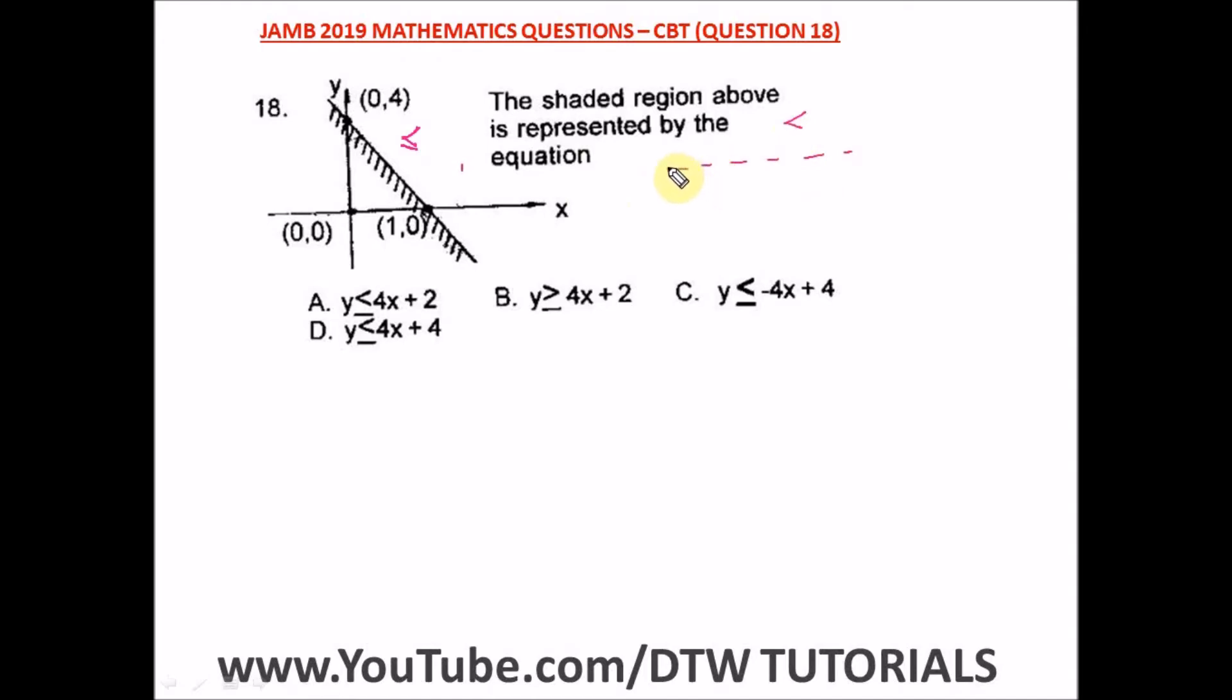But once it is a dark line joining, you have a less than or equal to. So this is the sign that would be in our final answer. But let's first of all get the equation of the line.